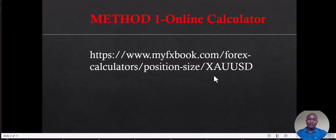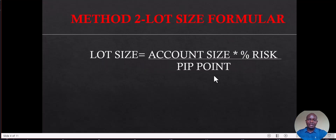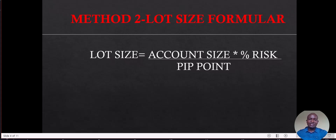The second method, which is my preferred one, is using the lot size formula. The lot size formula is: Lot Size = (Account Size × Percentage Risk) / P-points. The account size is the equity we have, multiplied by the percentage risk — like we are risking 2% here — and then divided by the P-points.